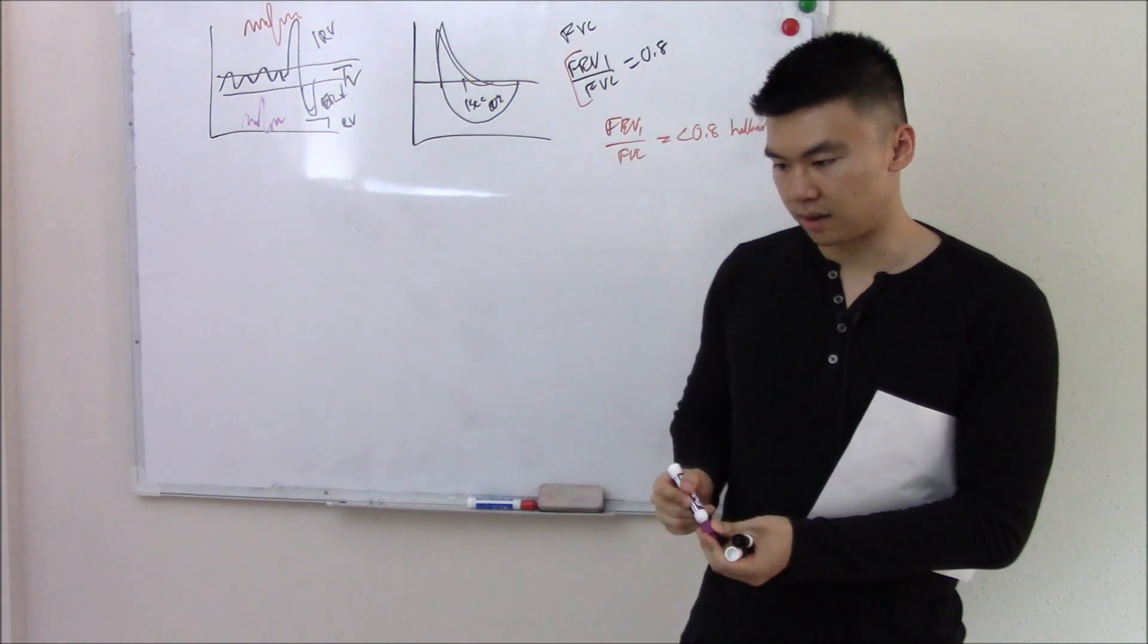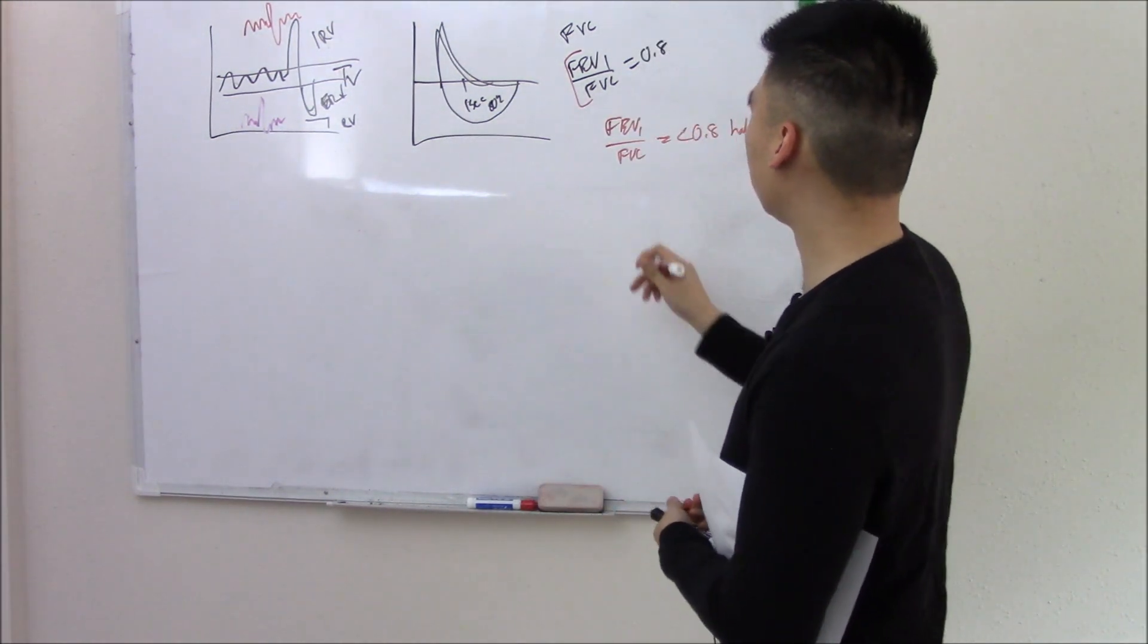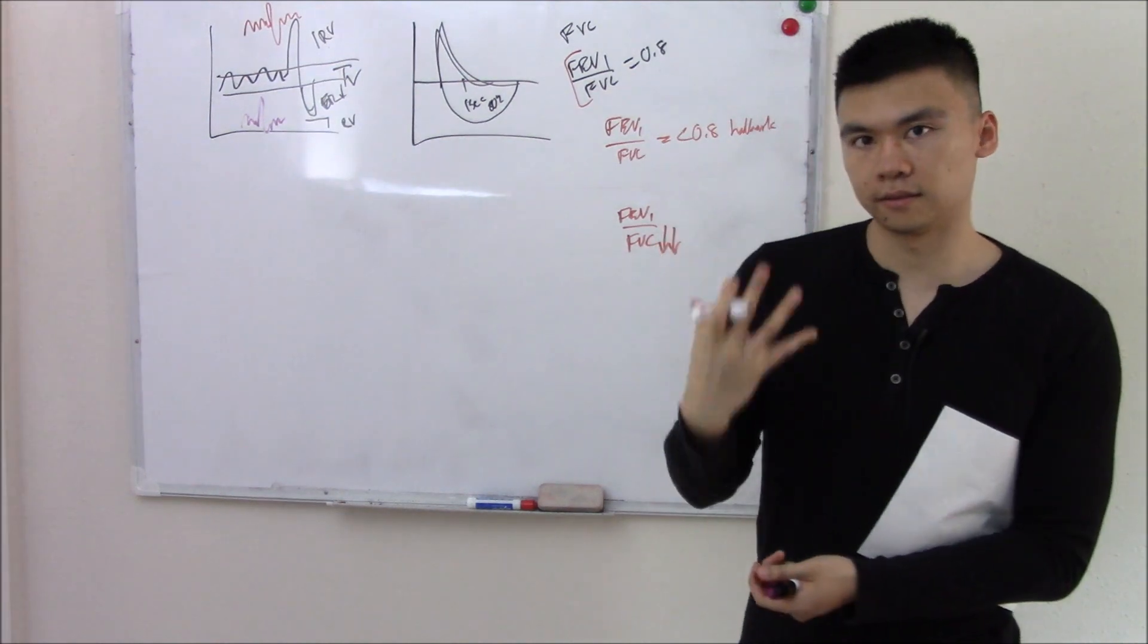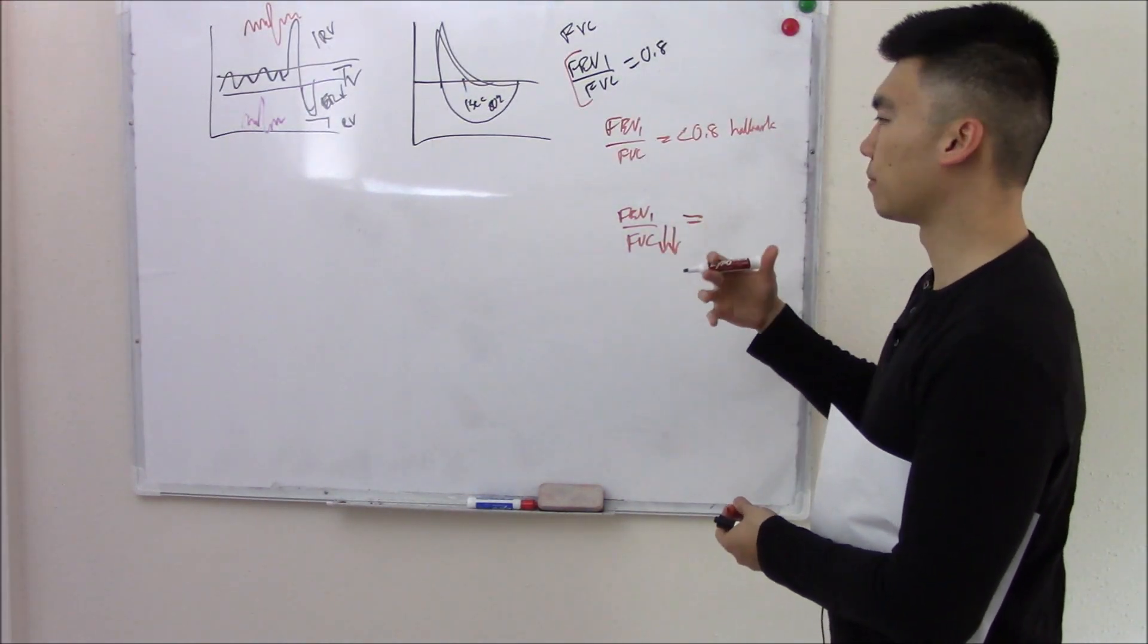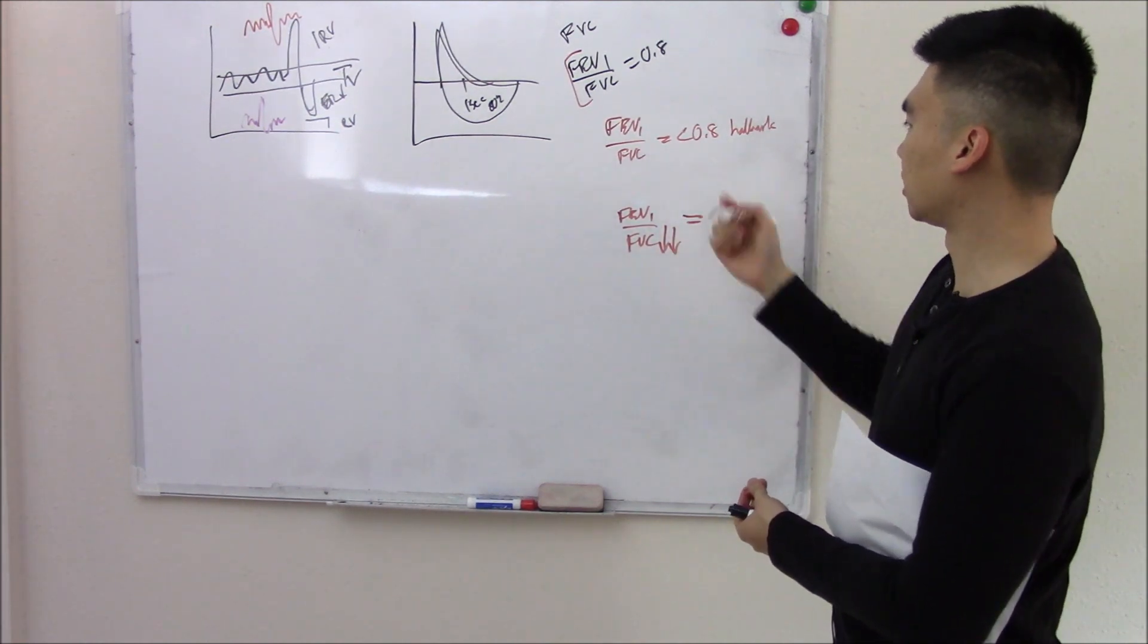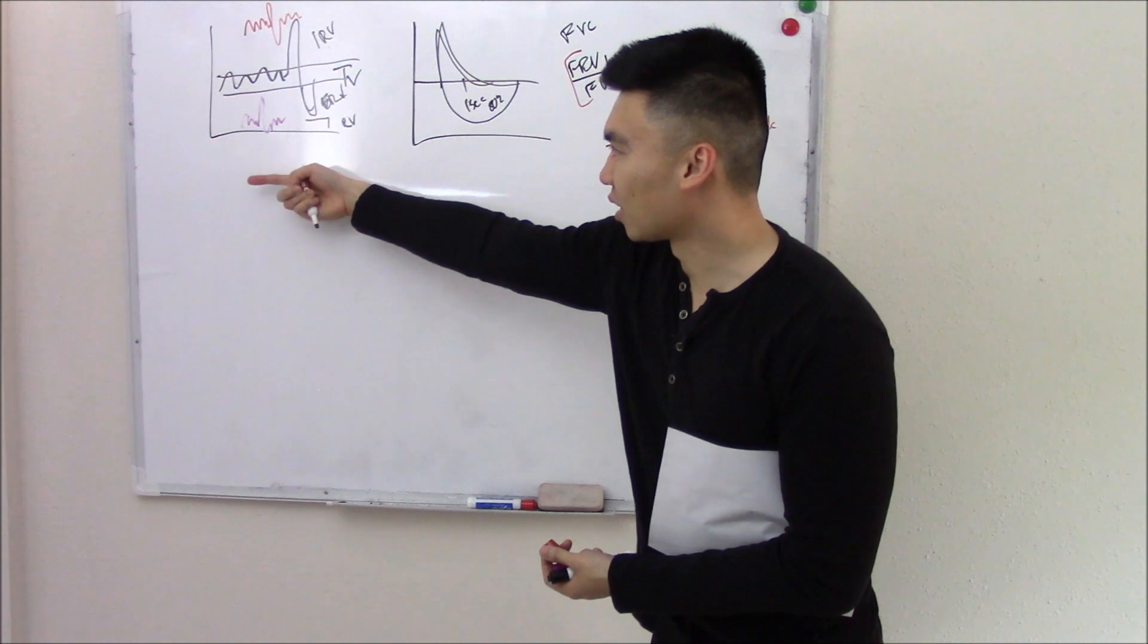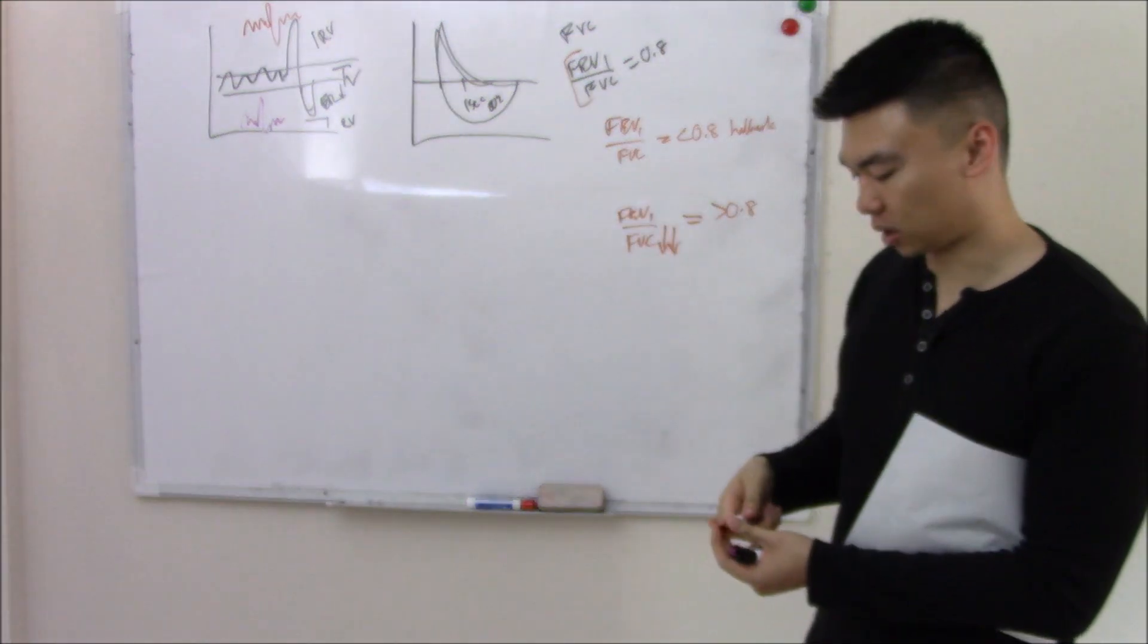And by proxy, you'll have decreased vital capacity. And if you have decreased vital capacity, then by nature, you will have decreased forced vital capacity. And by just mathematics, if you have a lower denominator, then you have an increased number. So this is sometimes over 0.8. That's completely opposite. We have lower lung volume, you have higher FEV1 to FVC ratio.